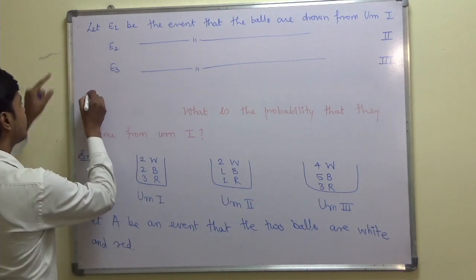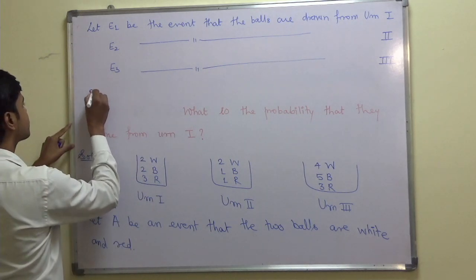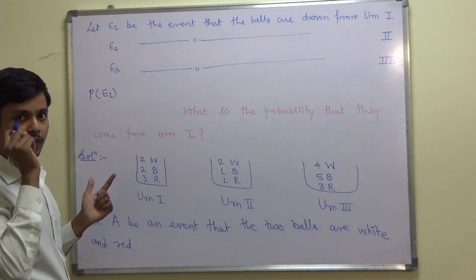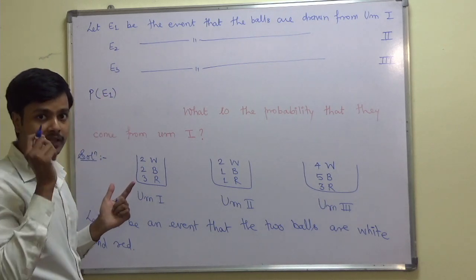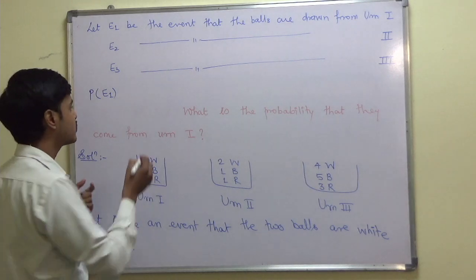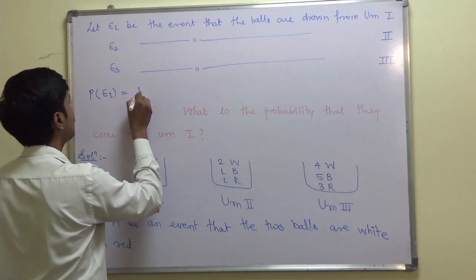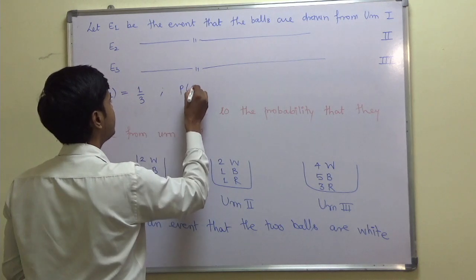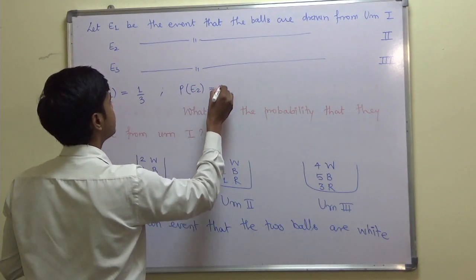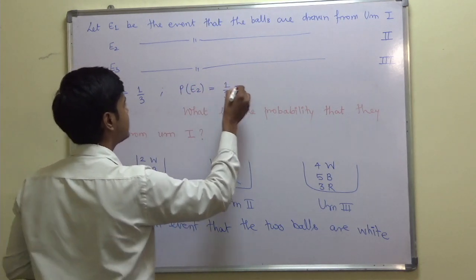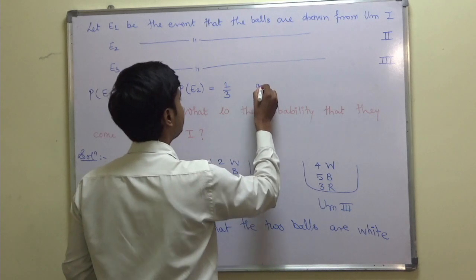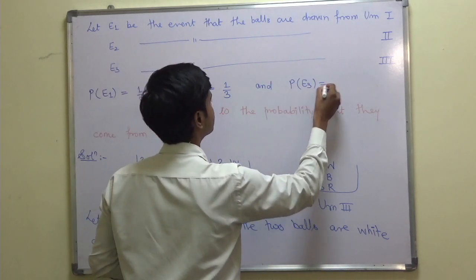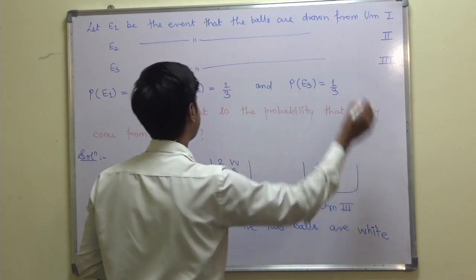Now, what is the probability of each event? The balls can be drawn from any of the 3 urns, so the probability of E1 is 1/3. Likewise, probability of E2 is also 1/3, and probability of E3 is also 1/3.